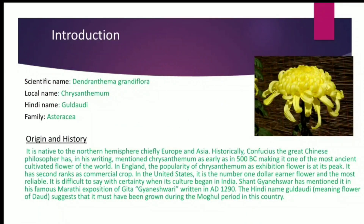Introduction. Scientific name: Dendron thema grandiflora; local name: Chrysanthemum; Hindi name: Guldaudi; family: Asteraceae. Origin and history — it is native to the northern hemisphere, chiefly Europe and Asia. Historically, Confucius, the great Chinese philosopher, mentioned Chrysanthemum in his writing as early as 500 BC, making it one of the most ancient cultivated flowers of the world.